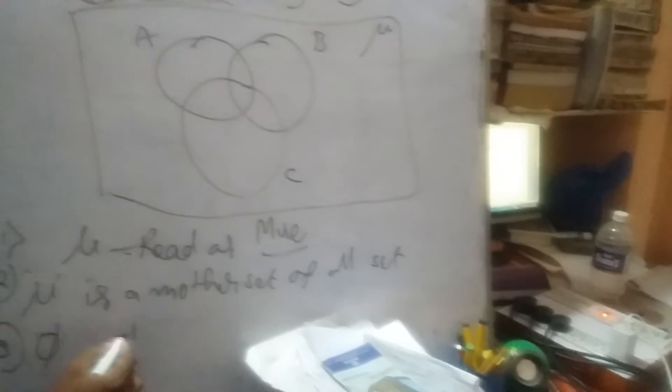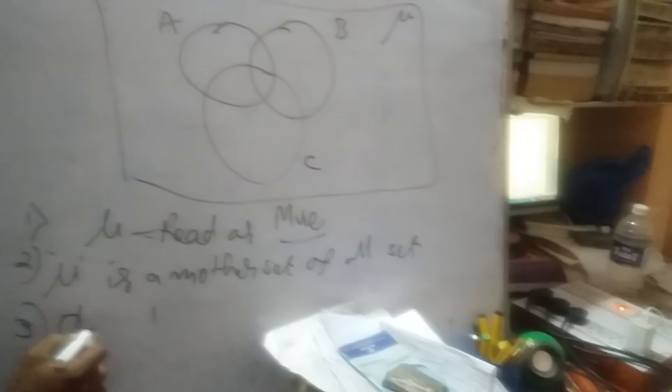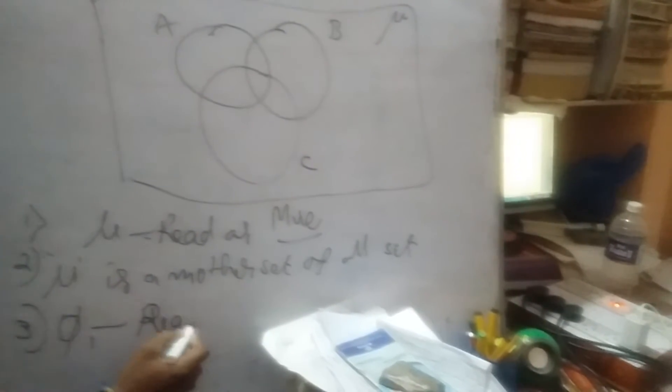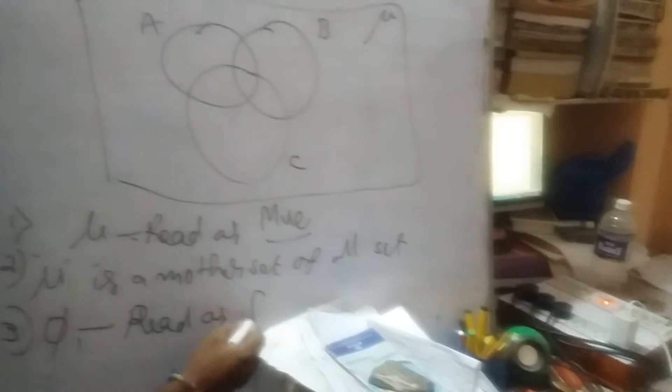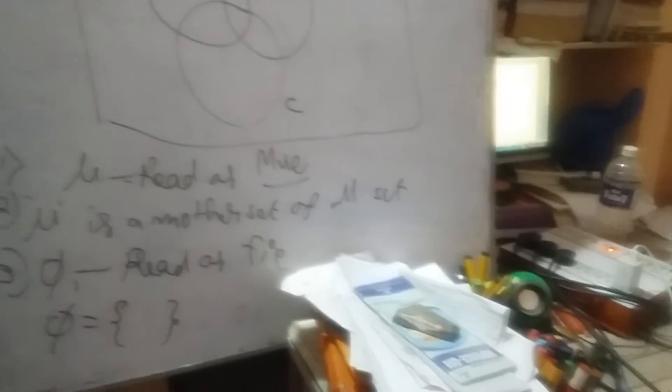And Phi — Phi is read as 'Phi' (F-I-E). Phi contains no elements. Phi is a subset of all sets. So Phi is a subset of every set. Remember this point.